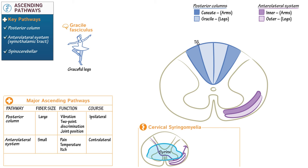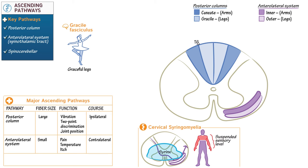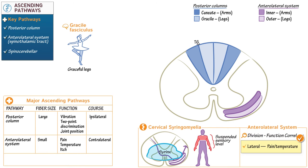To understand the clinical exam findings of cervical syringomyelia, draw a person with a suspended sensory level wherein small fiber sensation is lost in a cape-like distribution in the arms and upper trunk, but sensation is preserved in the legs. As a separate organizational principle, the lateral regions of the anterolateral system generally subserve pain and temperature, while the anterior regions subserve tactile and pressure sensation.